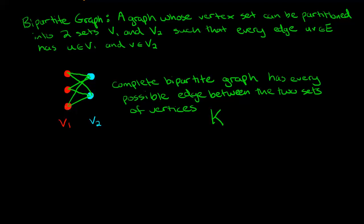We're just going from red to blue and vice versa, but never between things of the same color. So what we do is we have the wording KNM, where our first partite set V1 has size N, and our second partite set V2 has size M. So this little example is an example of K32.